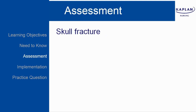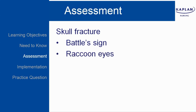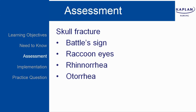Let's begin with assessment — assessment of a skull fracture. You may see battle sign, which is ecchymosis over the mastoid bone, and raccoon eyes, which is bilateral periorbital edema. Rhinorrhea is clear fluid from the nose; otorrhea is clear fluid from the ears. That clear fluid would be CSF.